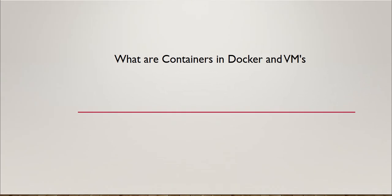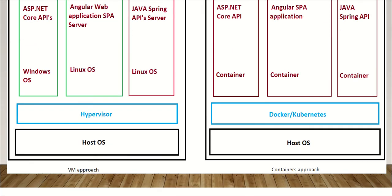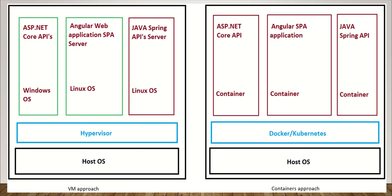When it comes to virtual machines, I'll take the example of VMware. If you look at this picture, I have a VM approach on one side and the Docker/containers approach on the other side. In the virtual machine approach, there is a physical hardware or physical machine, and on that physical hardware we have a host operating system — it may be Linux, Windows, or whatever.